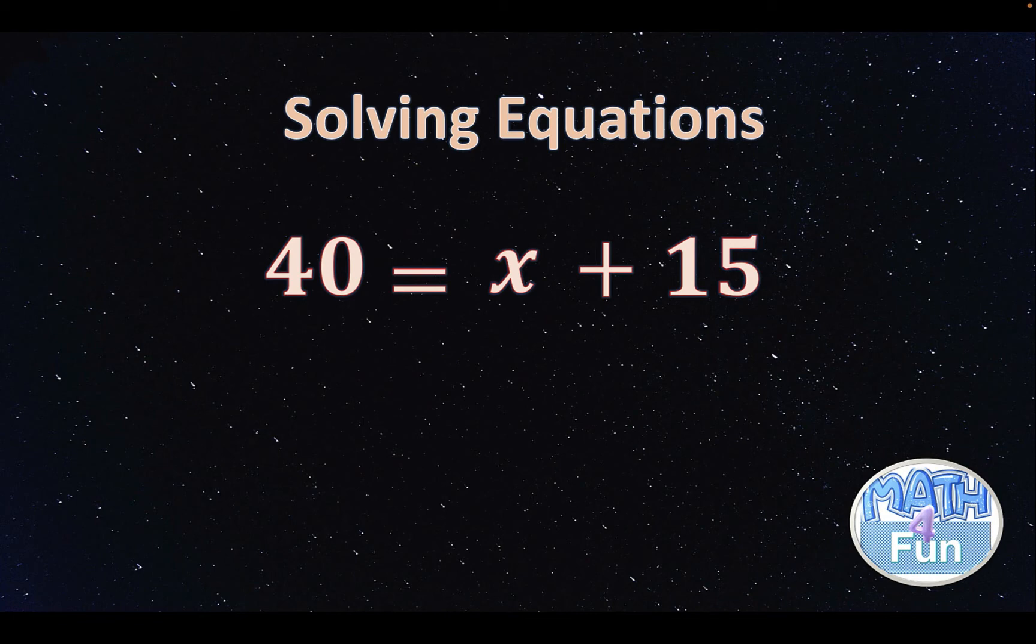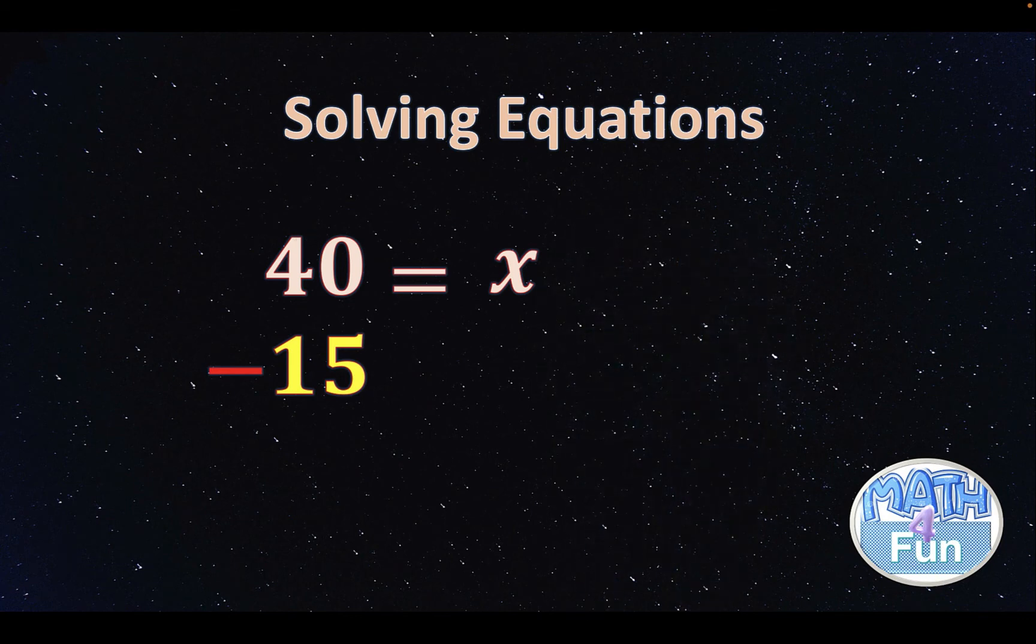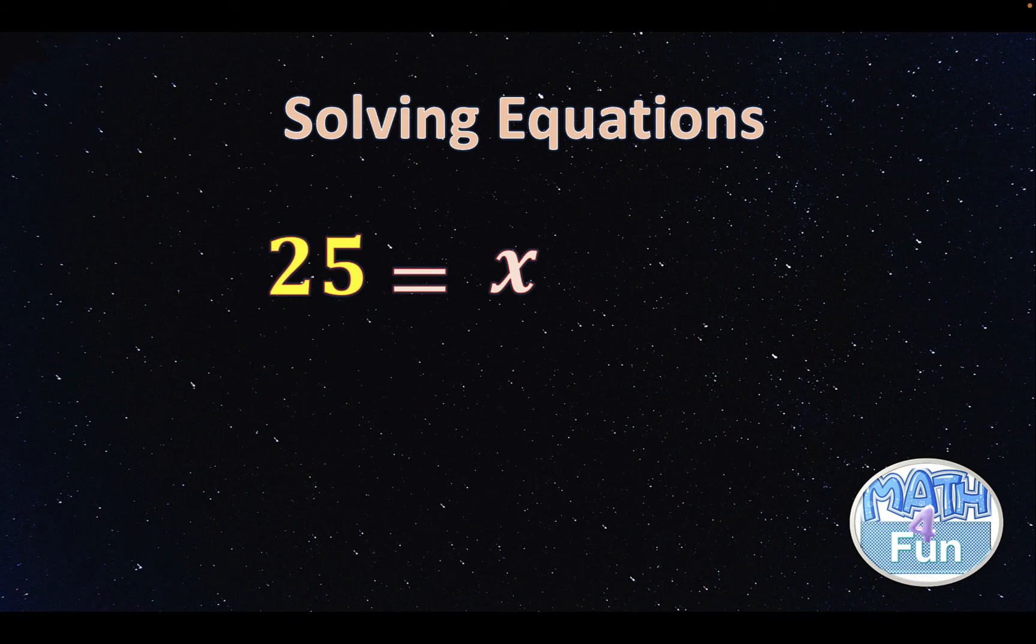Now we have to find x. To find x, we have plus 15 beside it, so we need to remove it. We add minus 15, and we add minus 15 on the other side. Now 15 minus 15 will go. You're left by x equal to 40 minus 15. 40 minus 15 is 25, and you can also play with the order, so 25 equals to x, which means that x is equal to 25.